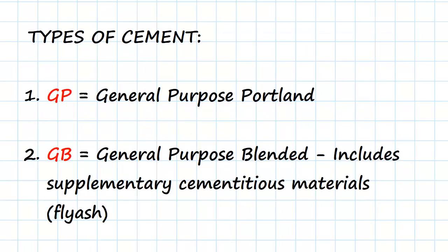The first one we're going to look at, which we've talked about a little bit before, is GP, which is General Purpose Portland cement. This is the most common mix we'll use, and it's based on Portland cement, so it doesn't have a high range of supplementary cementitious materials in it, if any.